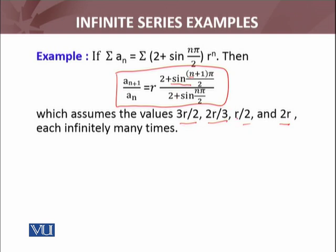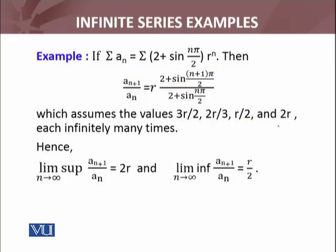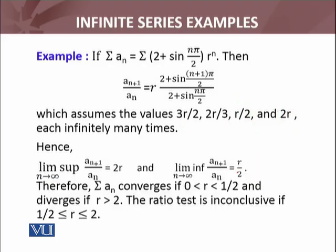If n is even, similarly these values are for the odd case. So this sequence a(n+1)/an assumes only these four values. And these repeat infinitely many times. Hence, limit superior of a(n+1)/an will be 2r. Limit superior is the largest number among these. Whatever r is, it will be 2r. And limit inferior of that sequence a(n+1)/an, the smallest value among all of these whatever the value of r, will be r/2.